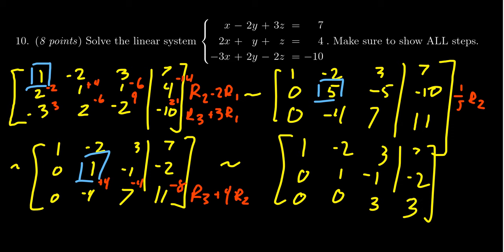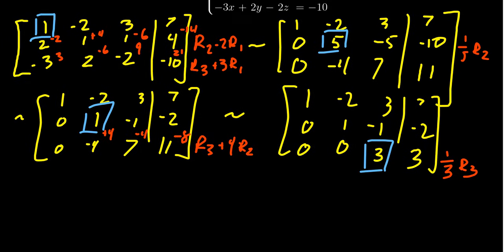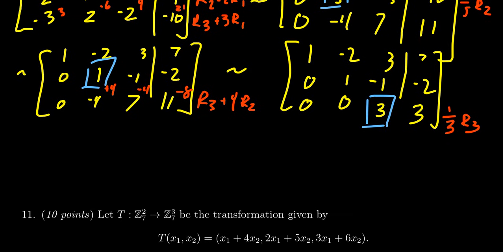And so then my pivot will move to the 3,3 spot that I want to think about. I want that to be a 1, so I'm going to divide the third row by 3. Scroll things up so I have some more space. So we get 1, -2, 3, and 7. We're going to get 0, 1, -1, -2. And we're going to get 0, 0, 1, and 1.